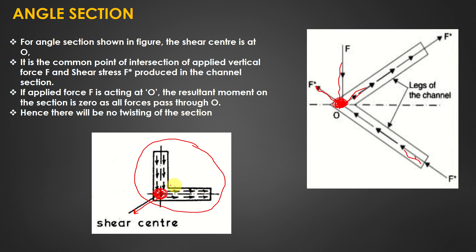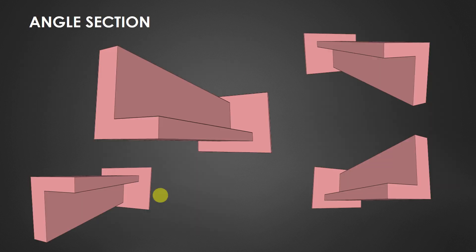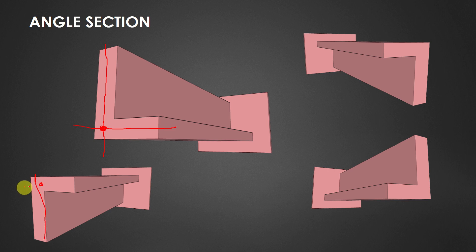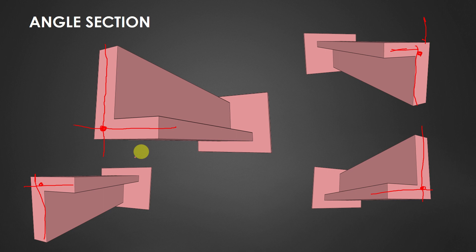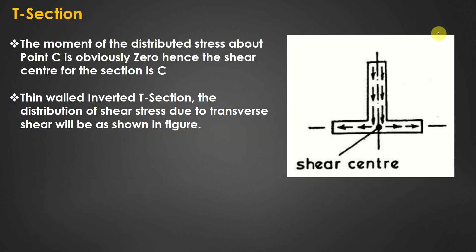The calculation for angle section is very easy — you just have to look at the intersection point. I have shown different types of angle sections here, and for all of them the shear center is ultimately located at the intersection of F* and the applied vertical force. If you apply the load at the shear center — at the intersection — there will be no twist in the beam.